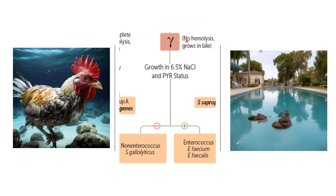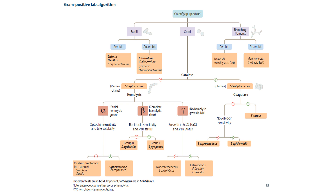Gamma hemolysis is actually no hemolysis at all. These organisms grow in bile and in 6.5% sodium chloride solution — the sodium chloride reminds me of a saltwater pool. Within this group we have enterococcus and non-enterococcus. Enterococcus bacteria sound like feces, so we picture feces floating and thriving at the top of the pool. The non-enterococcus, Strep gallolyticus — 'gallo' is Spanish for rooster — can't really swim and sinks to the bottom, unable to grow in the 6.5% NaCl solution.